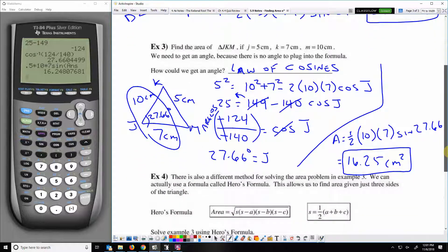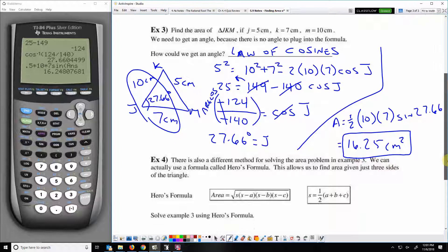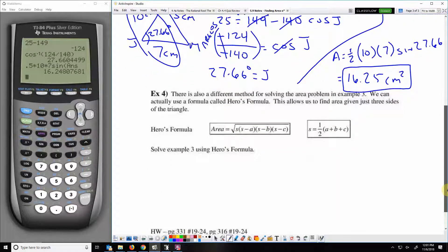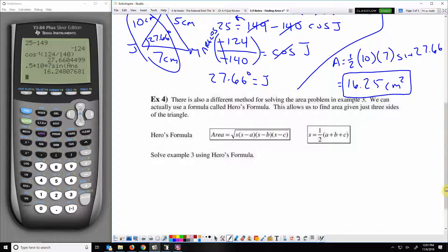I'm going to show you another way to do that same triangle. When you are given side-side-side, you can use what's called Hero's Formula to find the area. Hero's Formula is the square root of S times S minus one side times S minus another times S minus the third side. What is S? S is half of A plus B plus C, which is the semi-perimeter.